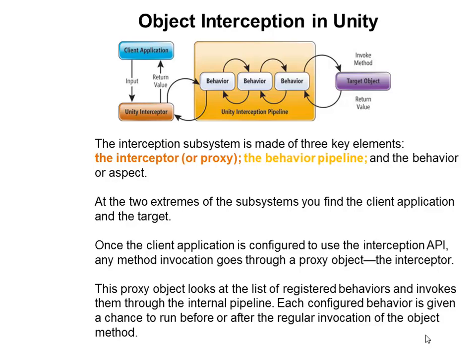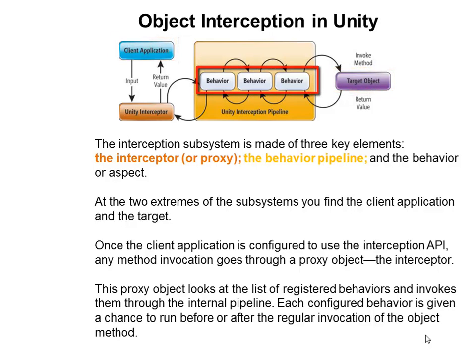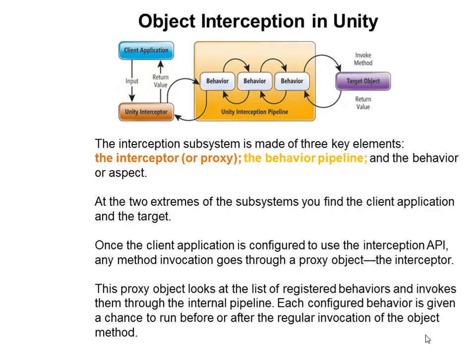At the two extreme ends of the subsystem you will find the client application and the target. Once the client application is configured to use the interception API, any method invocation goes through a proxy object — the interceptor. The proxy object looks at the list of registered behaviors and invokes them through the internal pipeline. Each configured behavior is given a chance to run before or after the regular invocation of the object method. Once registered, all the calls from the client application will be intercepted by the interceptor.